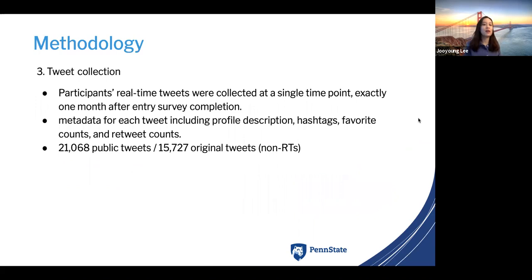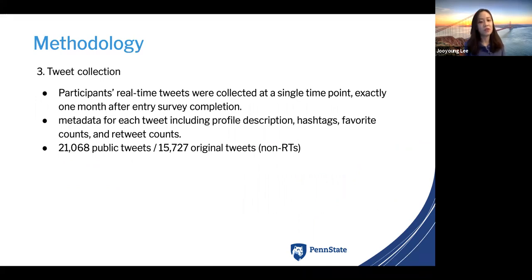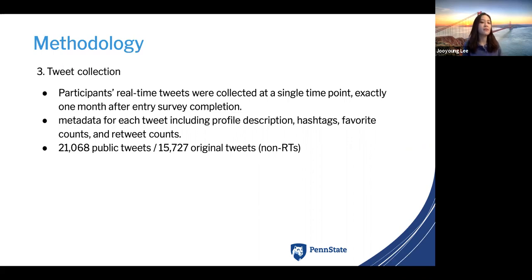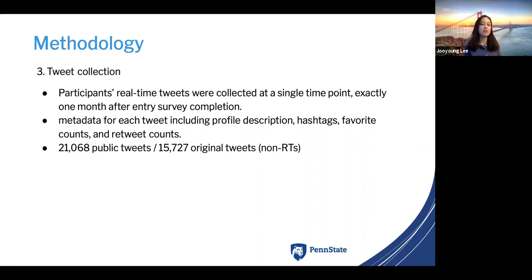At the same time, we collected participants' real-time tweets so we could look into what they were actually posting, apart from their self-reported answers. Real-time tweets were collected at a single time point exactly one month after the entry survey completion, and metadata for each tweet including profile description, hashtags, favorite counts, and retweet counts were also collected. In total we had 21,068 public tweets, but we narrowed down to 15,727 tweets for our analysis because these were actually posted by users as non-retweets.